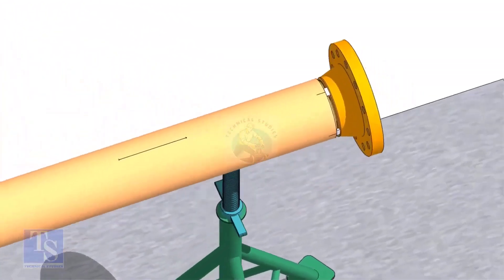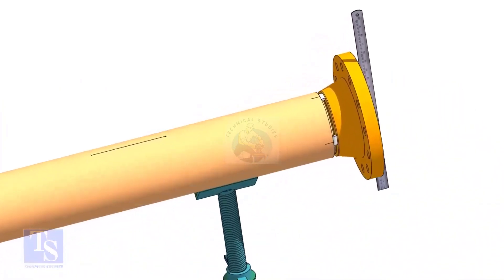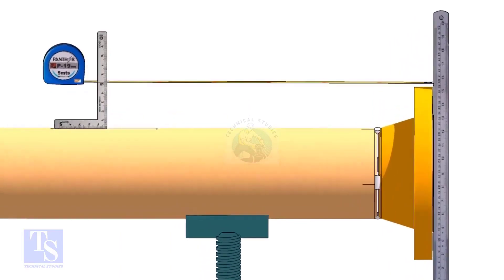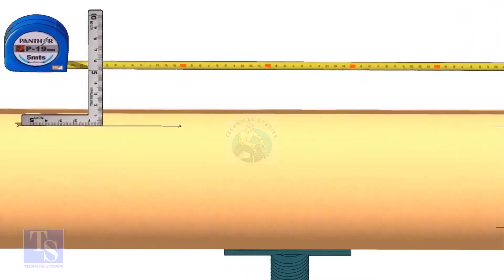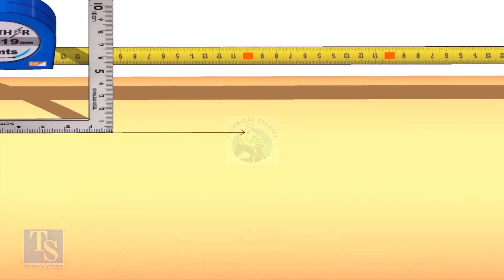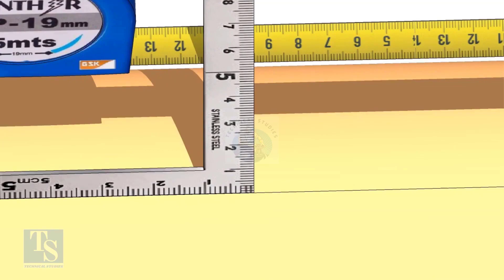Hold a steel ruler on the face of the flange vertically. Put a right angle on the pipe where the line is drawn. Move the right angle until the edge comes on 595mm on the tape. Mark on the pipe where the right angle edge touches.